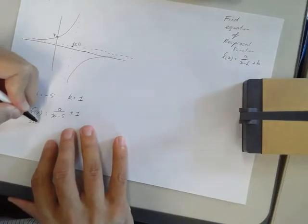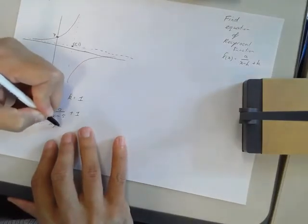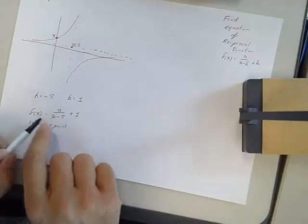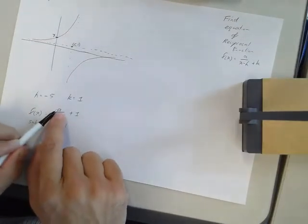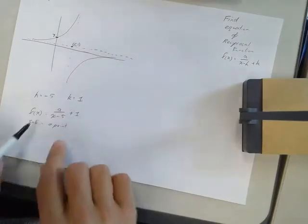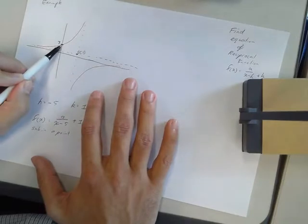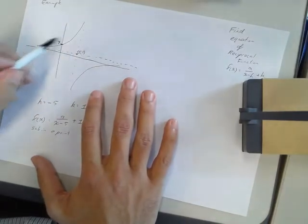Now I need to sub in a point, because if I know y and I know x, I can find A. A is the only unknown left. So sub in a point. Luckily I have a point here marked, it's the y intercept.